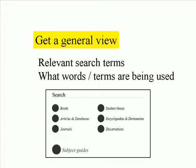Reflect on what words and terms are relevant and which ones are being used within the subject field. To your aid is a link on the university library's web page to different encyclopedias and dictionaries. You can also use the subject guide for your subject field to find encyclopedias and dictionaries.